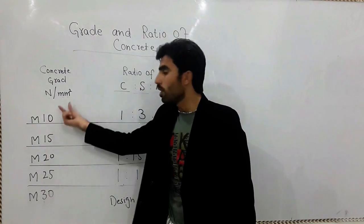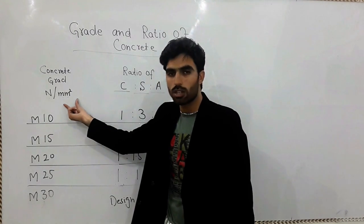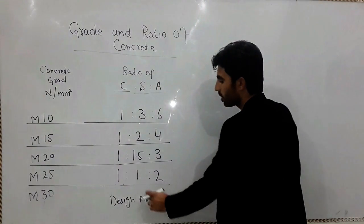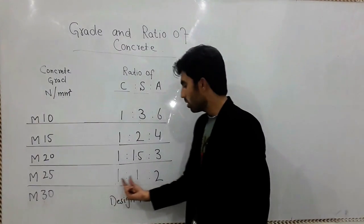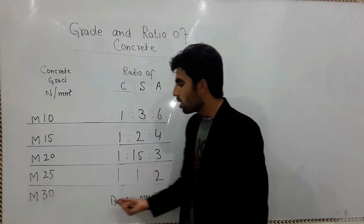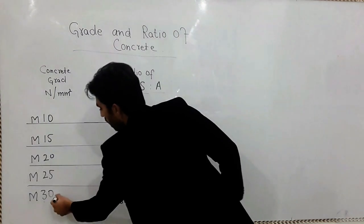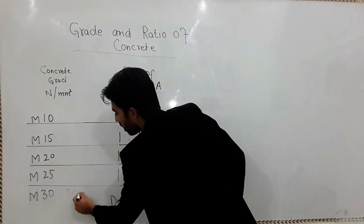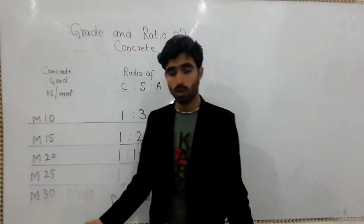When you need to get 25 Newton per mm square strength, means compressive strength of the concrete, you must use 1:1:2 - one cement, one sand, two aggregate. For M30 to M40, you can design mix forward.